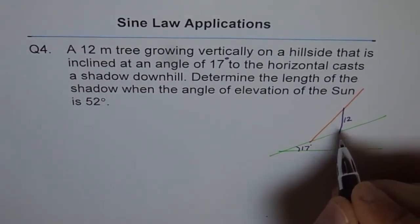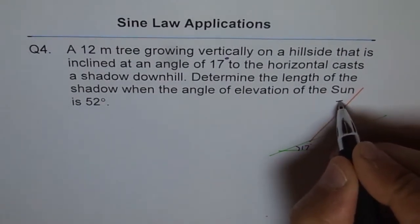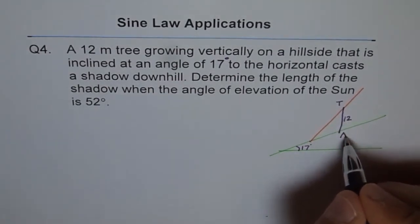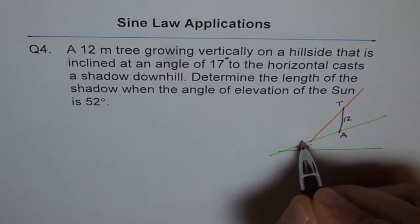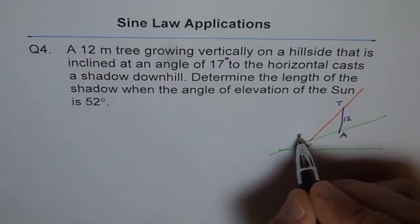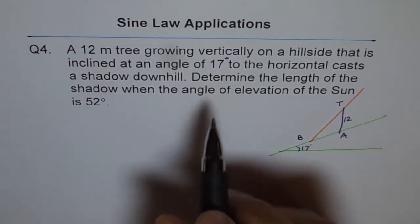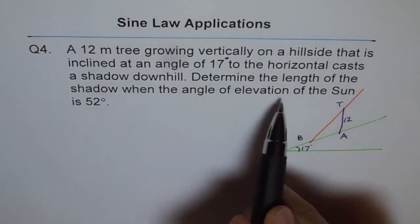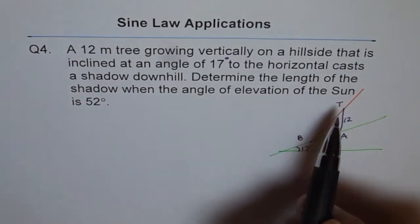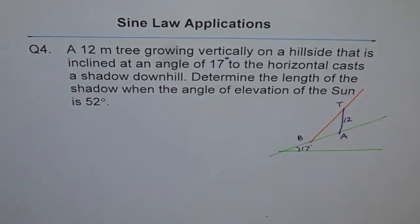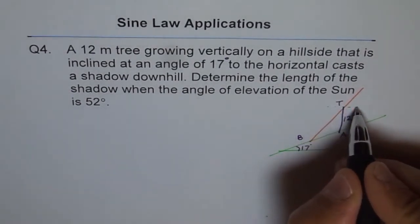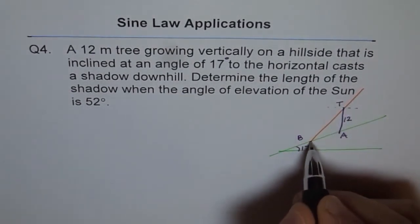So this is our tree top T, and let's say this is A and this is B. Determine the length of the shadow when the angle of elevation of the sun is 52 degrees. The angle of elevation is always measured with the horizontal.